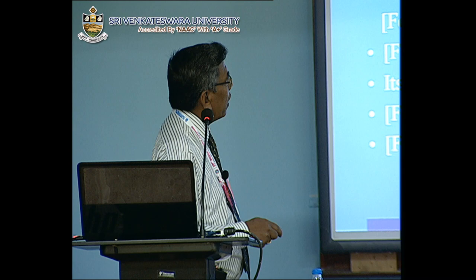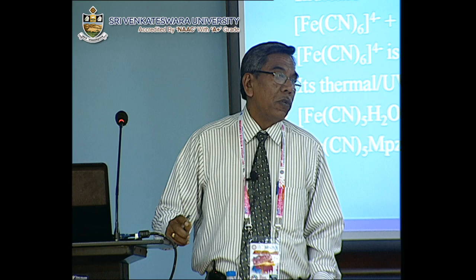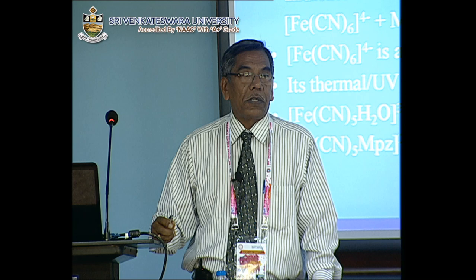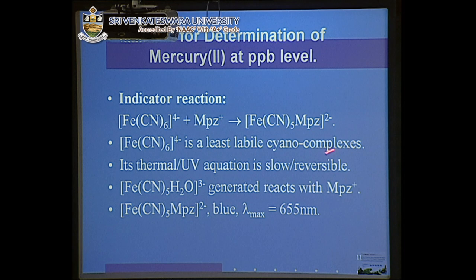A very simple reaction was taken: FeCN6 and MPZ (N-methylpyrazinium iodide). The reaction gives the FeCN5-MPZ complex. FeCN5 is the least labile cyanocomplex — it does not readily undergo ligand substitution reaction. But using a catalyst, the reaction can be made much faster. This forms cyanocomplexes — the least labile cyanocomplexes.